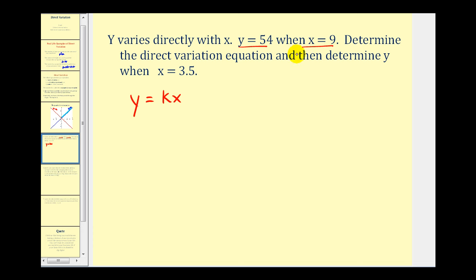And we can do that, because they told us that Y equals 54 when X equals nine. So by performing substitution, we would have 54 equals K times nine. We divide both sides by nine. We discover that in this problem, K is equal to six. Which tells us that our direct variation equation for this problem would be Y equals six X. So this is the first part of the question.